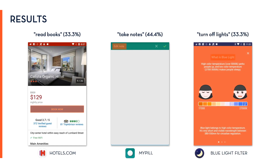Savant performed poorly for some of the representative tasks. The top result for 'read books' was from Hotels.com, highlighting the limitation that Savant is currently unable to distinguish between verbs and nouns. For 'take notes,' Savant returned a shortcut from MyPill, a domain-specific app that allows taking notes only as a side feature. Finally, for 'turn off lights,' Savant suggested a shortcut from the Blue Light Filter app, while participants were expecting apps for managing smart home devices.